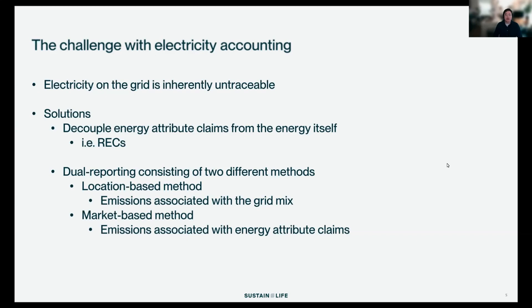RECs solve the problem of traceability and double counting, but we still need a solution for how we're going to account for emissions — how we get that emissions number for my electricity. The greenhouse gas protocol introduced a dual reporting approach consisting of two different methods of calculating your scope two electricity emissions. We now have two emissions numbers that are not necessarily additive — just different ways of looking at my electricity emissions. These are called the location-based and market-based methods.